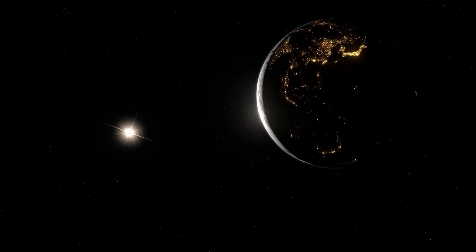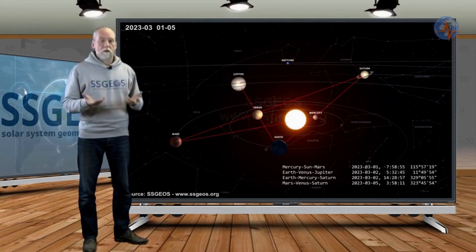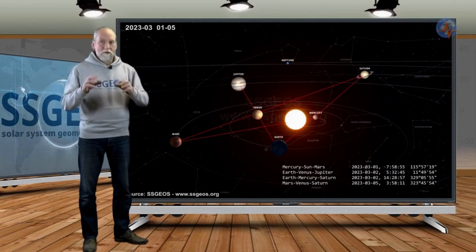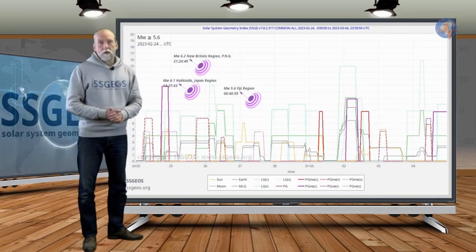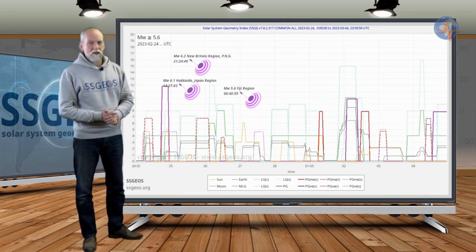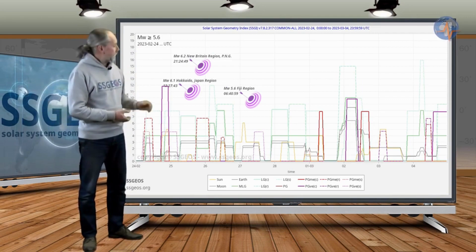Their predictions are so general that there will always be an earthquake that fits, such as there will be an M4 earthquake somewhere in the US in the next 30 days, or there will be an M2 earthquake on the west coast of the US today.